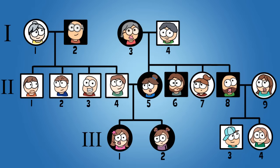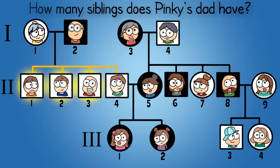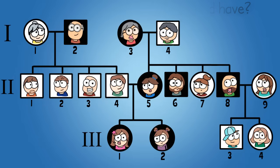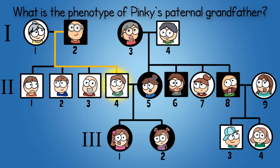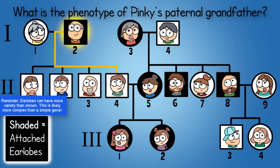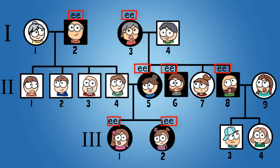Just to make sure you understand this: how many siblings does my dad have? Here's my dad in generation 2, number 4. He has three siblings—all brothers. What is the phenotype of my paternal grandfather? Here's my dad's dad—that would be my paternal grandfather. Because his square is shaded, his phenotype is attached earlobes. So let's go ahead and label all the shaded shapes with the genotype little e, little e since we know that's the trait we're tracking.